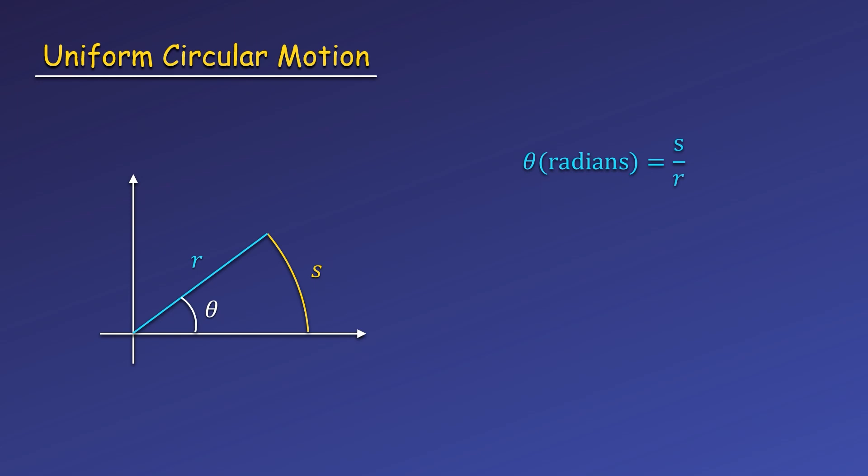If we use this formula and then put the circumference of a circle as the arc length, the radius will cancel, and we find that the total angle swept out by a full circle is 2π radians. This gives a way to convert between revolutions, radians, and degrees. One revolution is equal to 2π radians, and is also equal to 360 degrees.